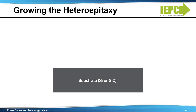Building a GAN transistor starts with the process of growing the gallium nitride, aluminum gallium nitride heteroepitaxial structure onto a substrate. A GAN heteroepitaxial structure involves at least four growth stages that we'll illustrate here.